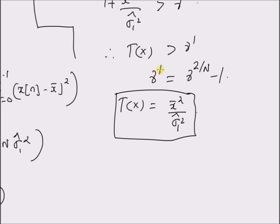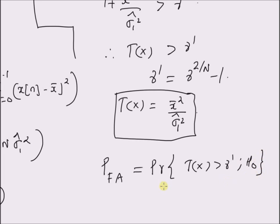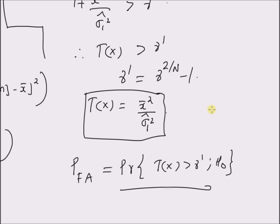The unknown threshold gamma' can be determined using the definition of probability of false alarm: P(T(x) > gamma' | H0). By using this definition, we can determine the value of gamma'. Thus, under the conditions that both the DC level and the noise variance are unknown, the test statistic becomes the ratio of the square of the sample mean to the estimate of the variance under the alternate hypothesis.